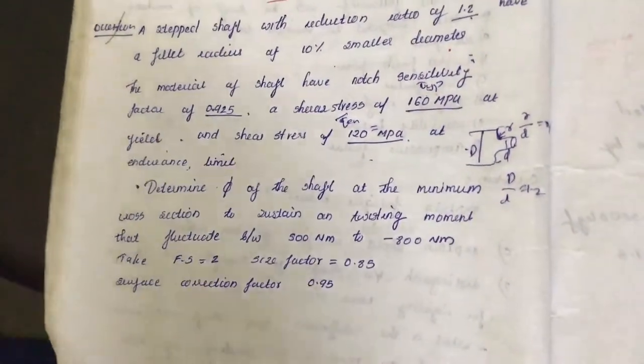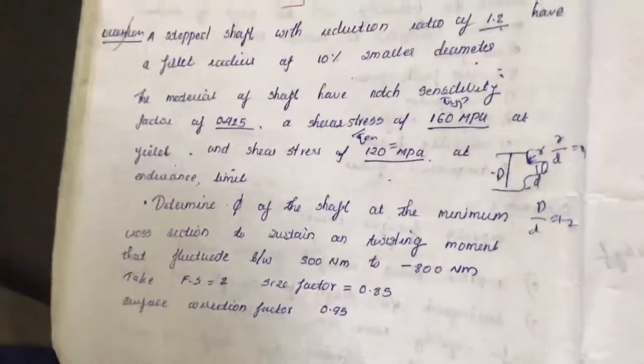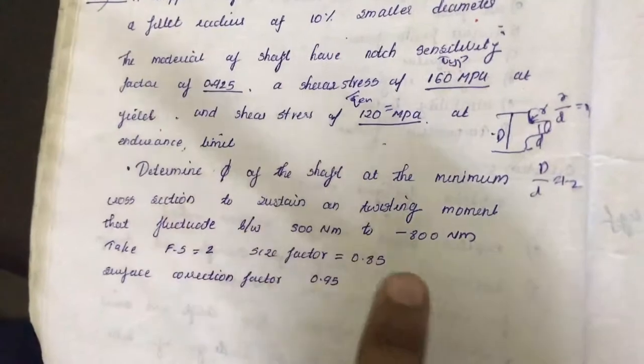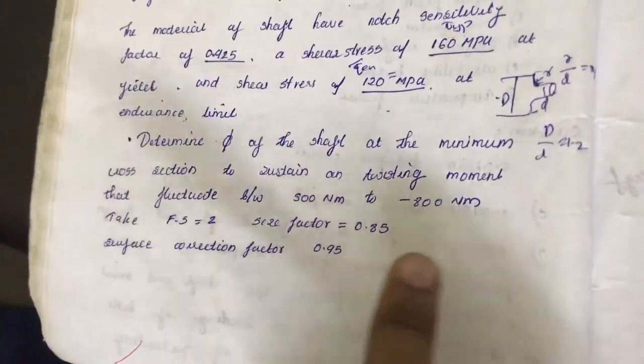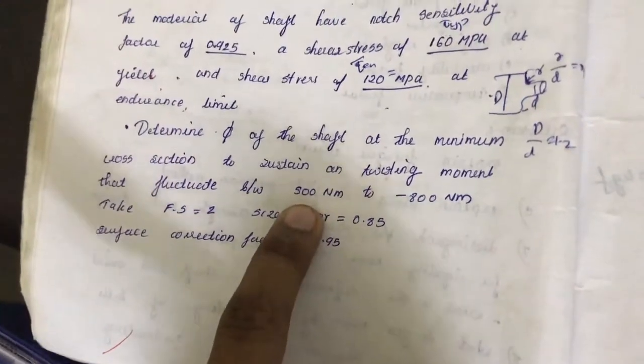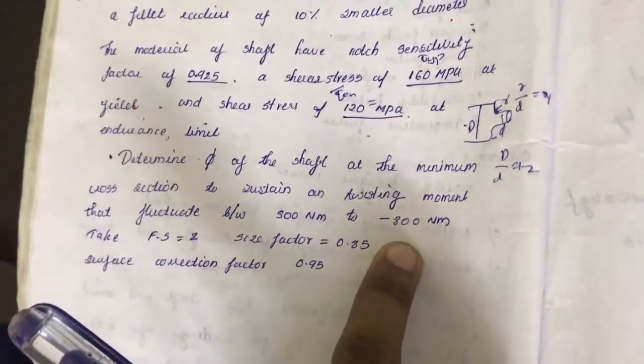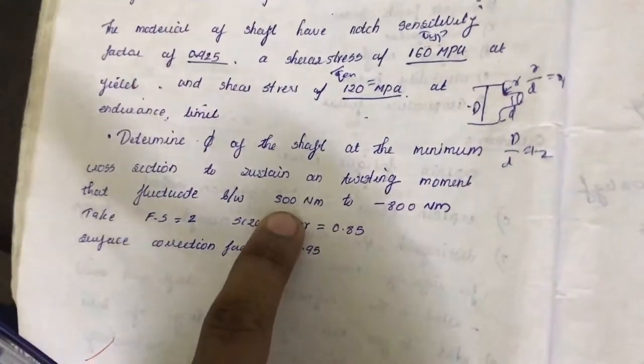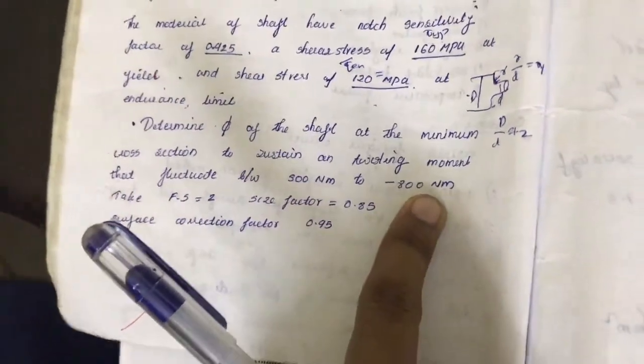This en means endurance limits, yp means yield point, that should not be confused. Then it is given in the question, asked to find the diameter, but the torsion moment fluctuates between 500 to minus 800. So we have maximum t is 500, minimum t is minus 800.